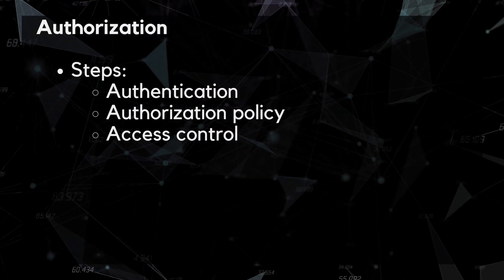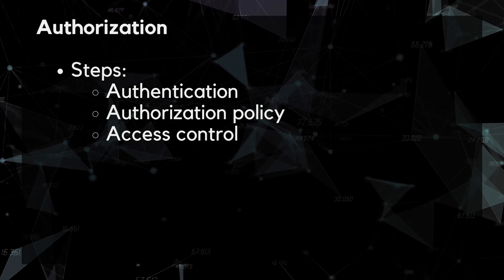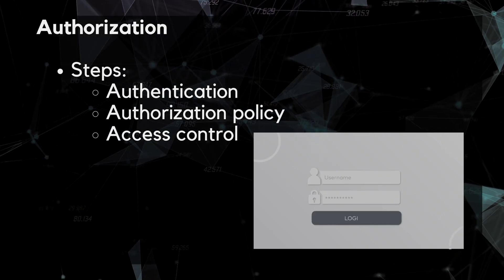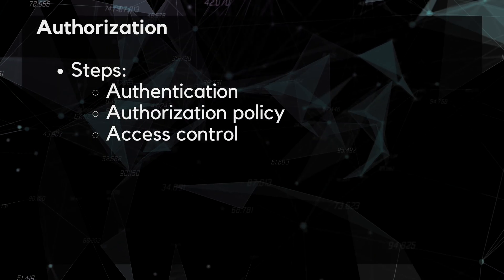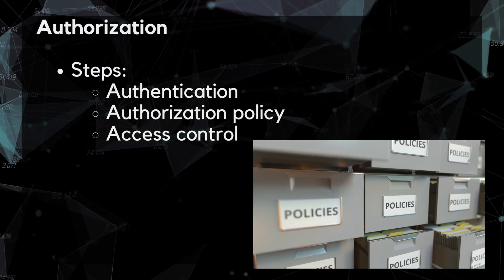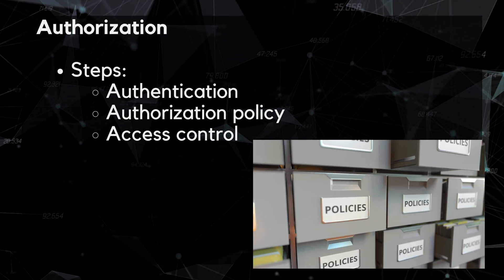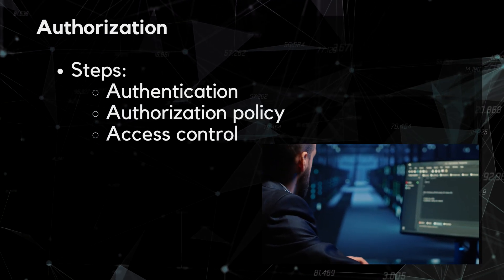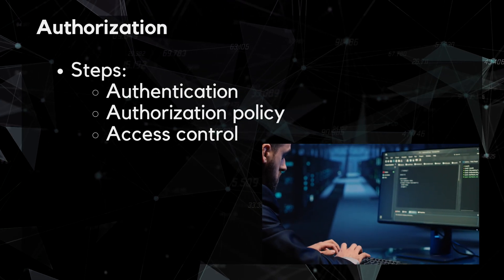The process of authorization involves several steps. First, authentication — before granting access, the system must verify the user's identity through credentials such as username, passwords, or biometrics. Next is authorization policy: once the user has been authenticated, the system checks the authorization policy to determine the level of access the user is authorized to have. The policy is usually defined by the system administrator or security team and can be based on factors such as job role, security clearance, or other criteria.